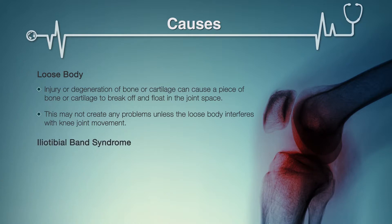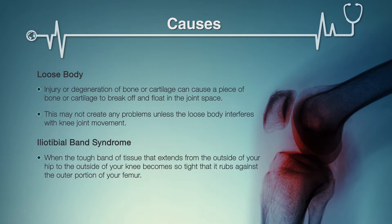Iliotibial Band Syndrome occurs when the tough band of tissue that extends from the outside of your hip to the outside of your knee, also known as the iliotibial band, becomes so tight that it rubs against the outer portion of your femur. Distance runners are especially susceptible to iliotibial band syndrome.